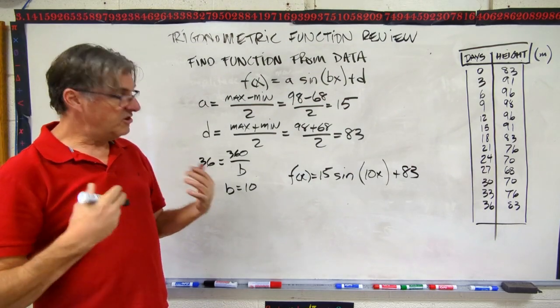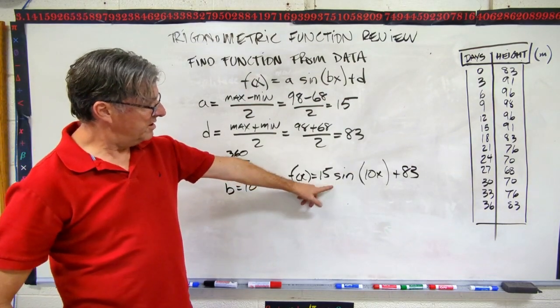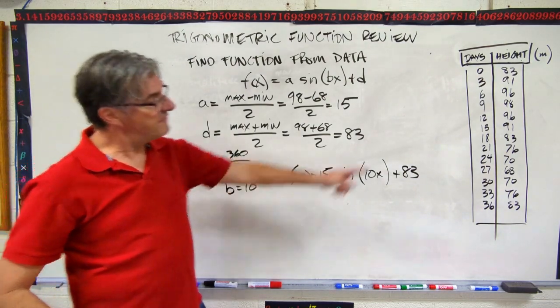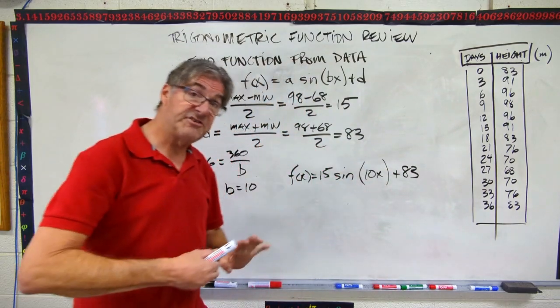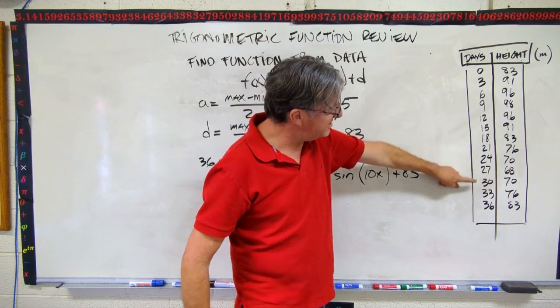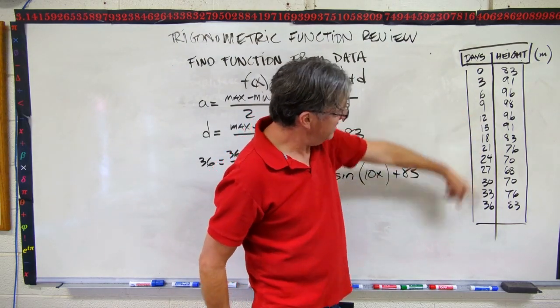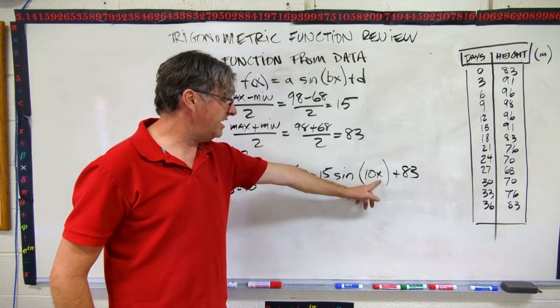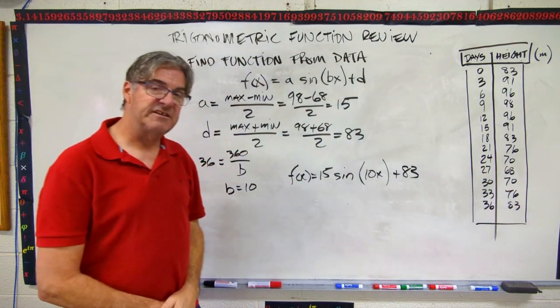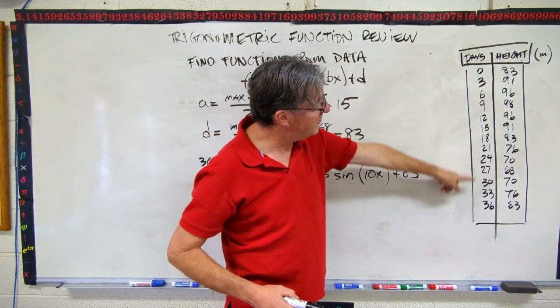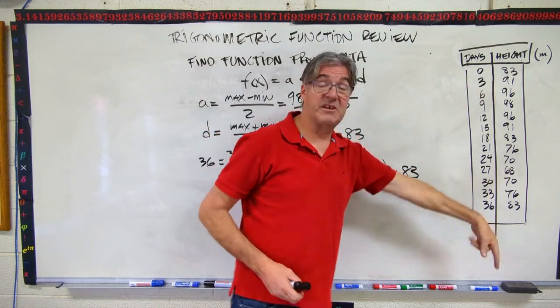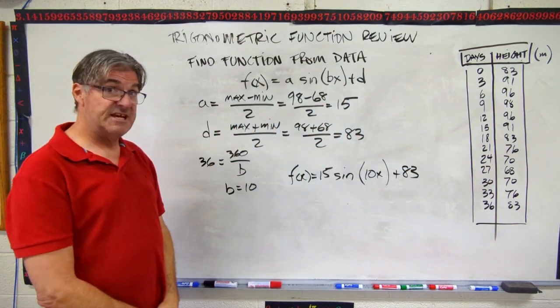Now, if you want, and I think it's a good idea, you can put this function into your calculator and check it and see what the graph does. And make sure the graph does what this data shows you. Also, as a check, and this one's a little easier to do, pick a random number out of this table. Like, let's try 30. And put 30 in for x. And do the math. And you should get out 70 for your height. So if you want to check your work, you can just randomly pick a couple of your day data, run it through your equation that you found, and it should give you the height data that's listed in your table.